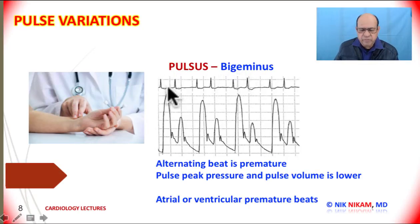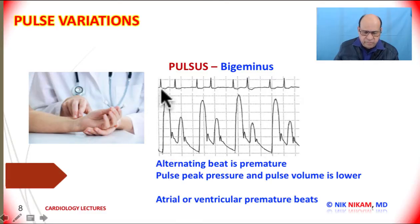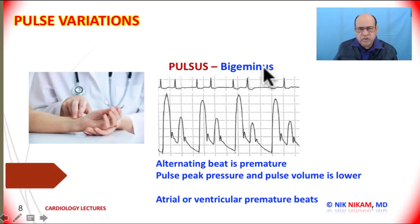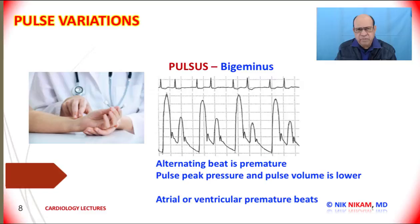Pulsus bigeminy refers to ectopic beats following every other normal QRS complex. On an arterial line or cardiac cath lab tracing, a normal beat is followed by a premature supraventricular beat. Because of the reduced RR interval, there is reduced filling time, so the left ventricle fills inadequately, resulting in an inefficient pulse. On a regular pattern — just like atrial bigeminy on the ECG — you may feel pulsus bigeminy at the radial pulse.